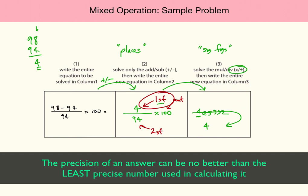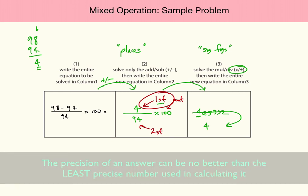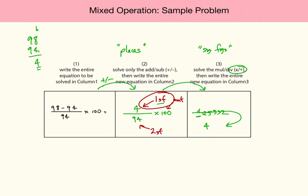Remember, work in discrete steps. As a challenge, see if you can figure out: if we had changed this to 98.0 minus 94.0, still dividing by 94 and multiplying by 100, can you see where the answer would have wound up being 4.3? If you can figure that out and understand it, you're well on your way to solving these problems consistently.